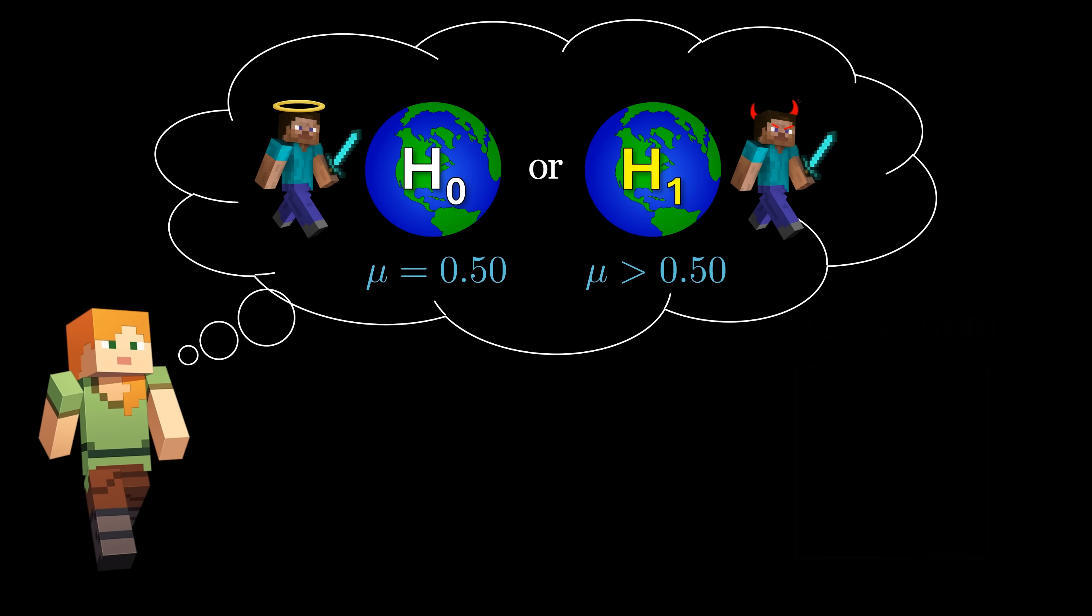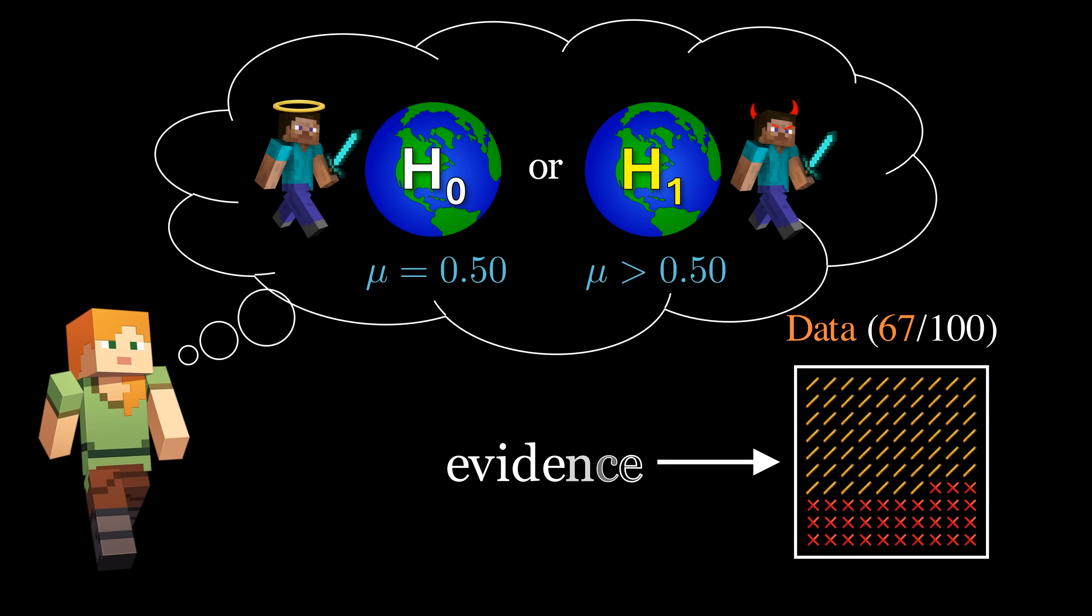Our goal in hypothesis testing is to use the data we've observed, that is, the number of blaze kills and rods collected, as some sort of evidence to try and guess which of these worlds we live in.